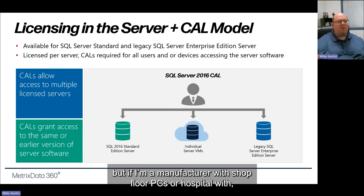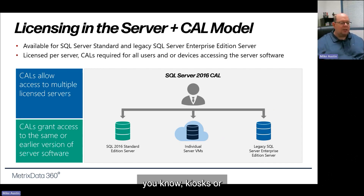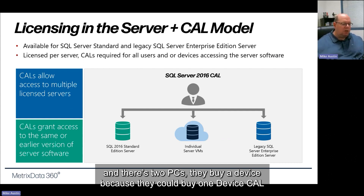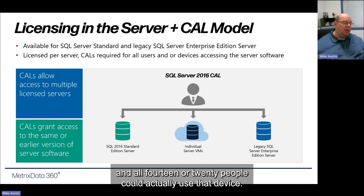But if you're a manufacturer with shop floor PCs, or a hospital with kiosks or PCs at nursing stations where you have four shifts and four people cycling through two PCs, they'd buy a device CAL — so all 14 or 20 people could use that device with just one device license count.